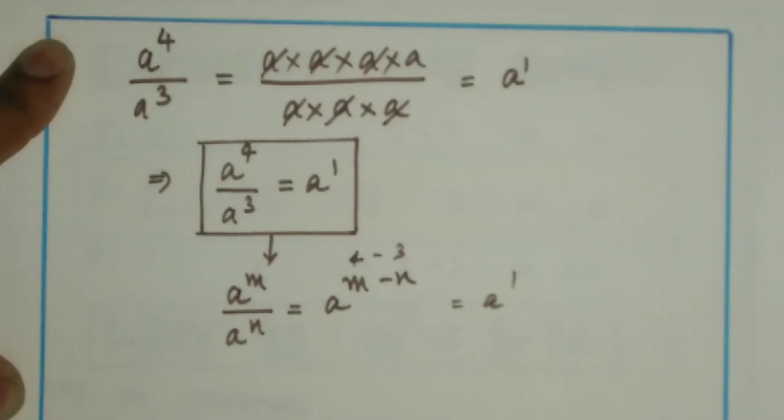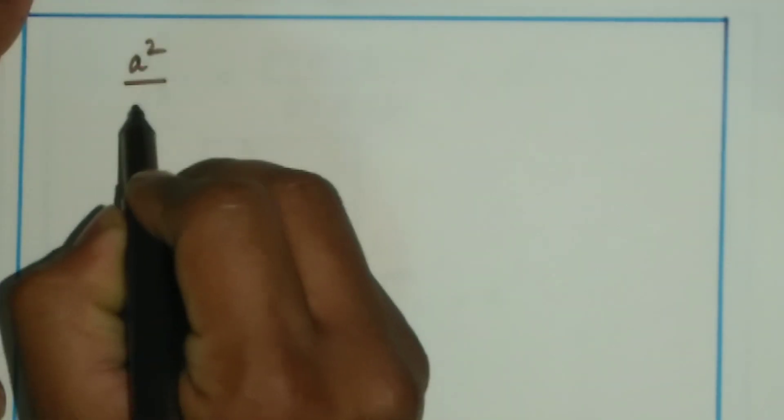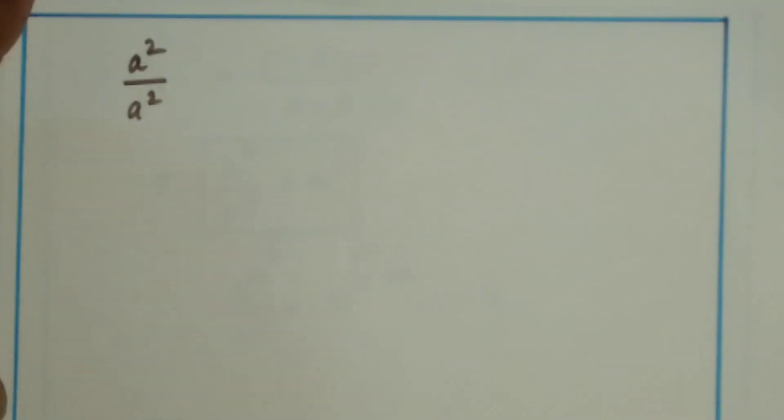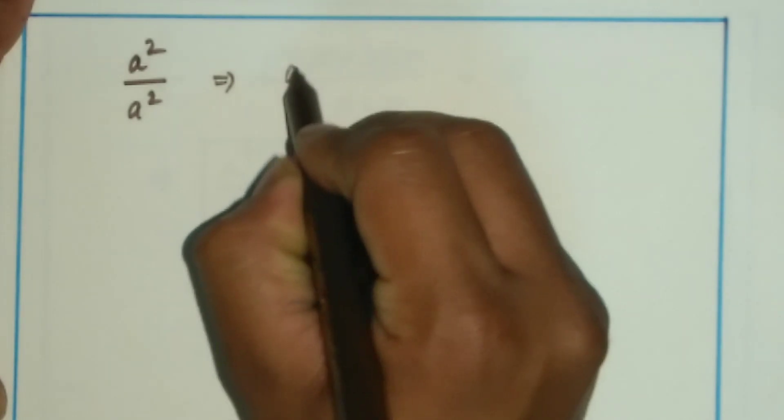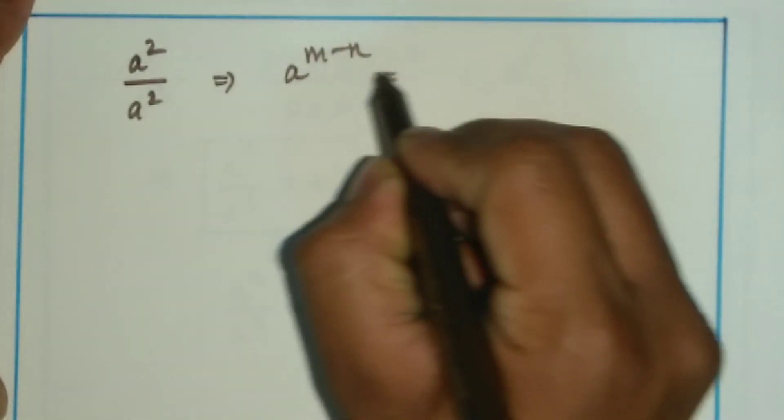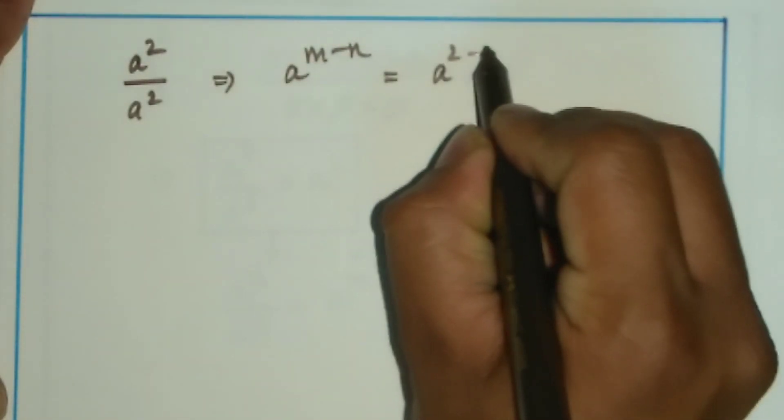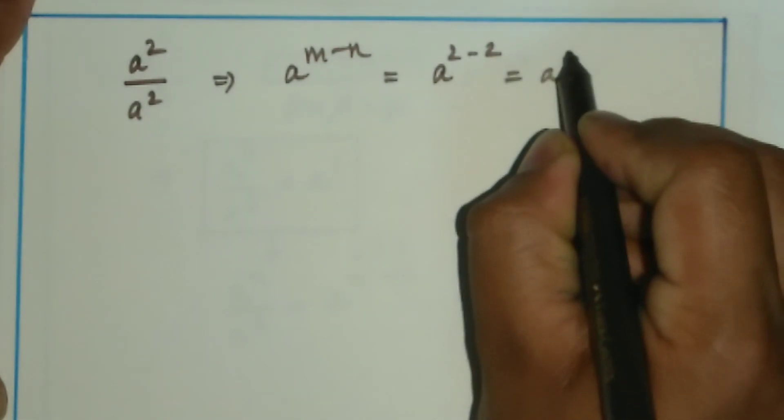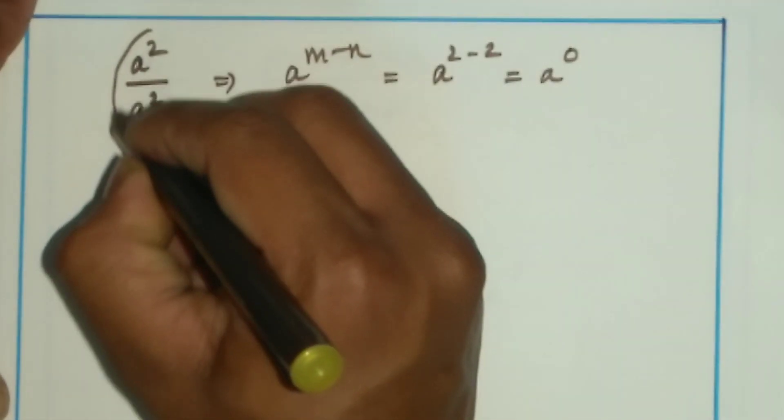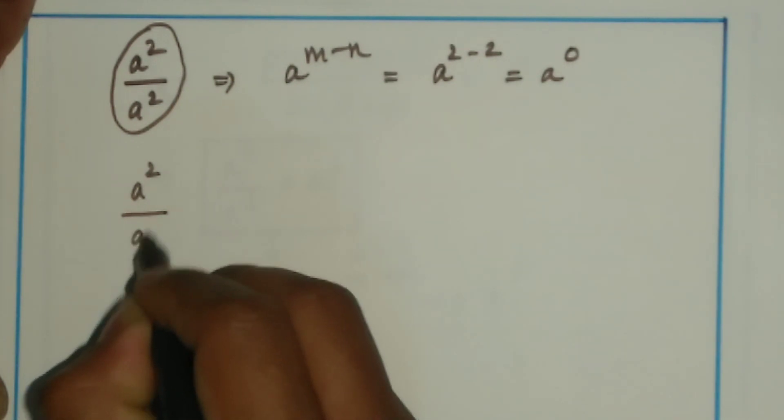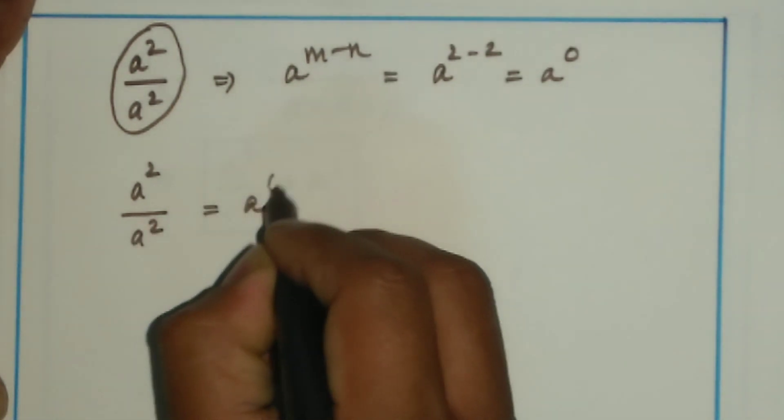Now, what happens if I take the same term in the numerator and the denominator? On applying the same formula of a power m minus n, I get a power 2 minus 2 which is equal to a power 0. That means a power 2 by a power 2 is equal to a power 0.